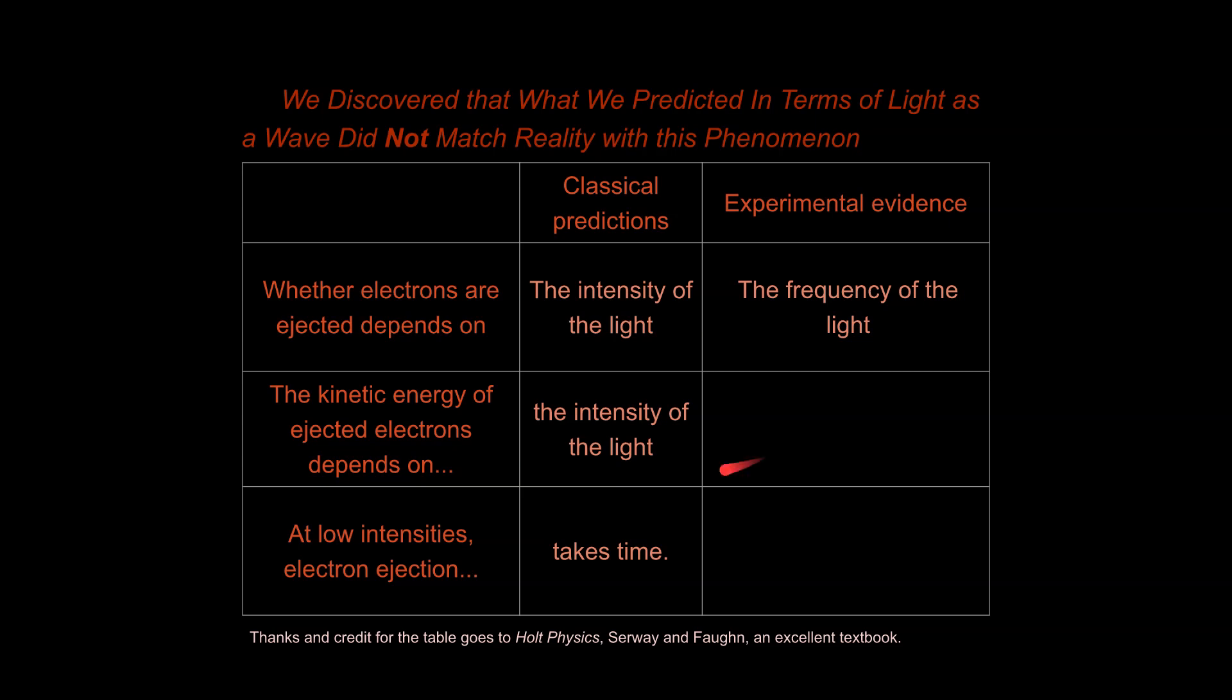Secondly, the kinetic energy of the ejected electrons depends on also the frequency of the light. It does not depend on the light as a wave. It depends on the fundamental properties of the light radiation that's coming in. Lastly, if we take a look down here, at low intensities, electron ejection can still occur. So even in dim light, if you happen to have dim light of a high enough frequency, like dim light towards the violet end of the spectrum, can kick off electrons, and that can happen almost instantaneously.